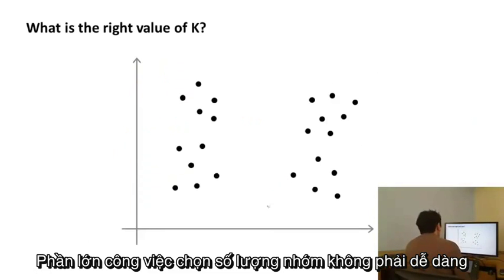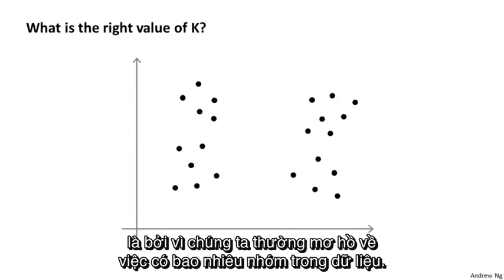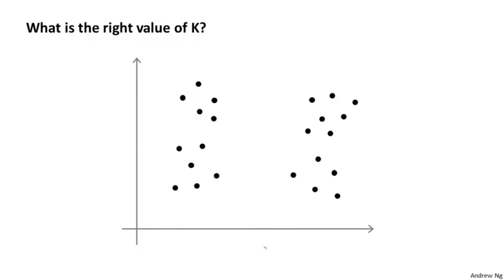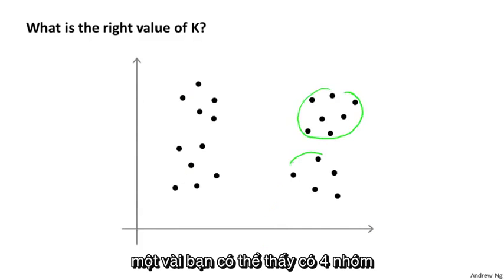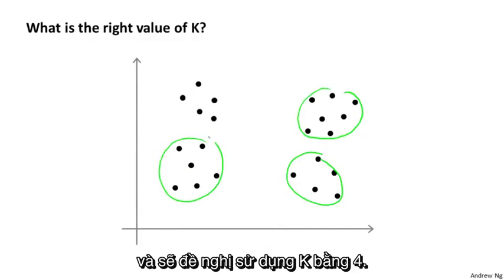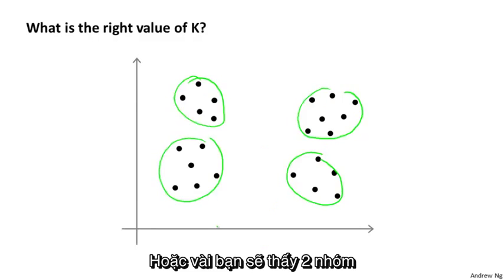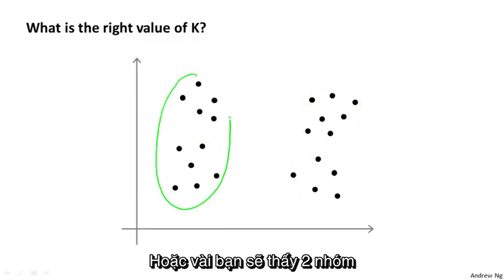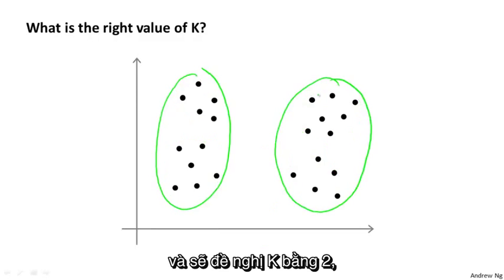A large part of why it might not always be easy to choose the number of clusters is that it's often genuinely ambiguous how many clusters there are in the data. Looking at this data set, some of you may see four clusters, and that would suggest using k equals four, or some of you may see two clusters, and that will suggest k equals two, and yet others may see three clusters.